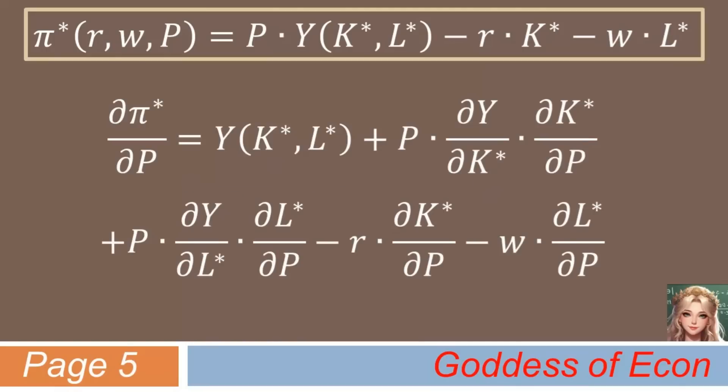Then we have partial derivative of π* with respect to p equals y plus price times partial derivative of y with respect to k* times partial derivative of k* with respect to p plus price times partial derivative of y with respect to l* times partial derivative of l* with respect to p minus r times partial derivative of k* with respect to p minus w times partial derivative of l* with respect to p.